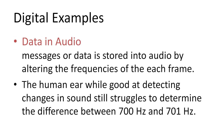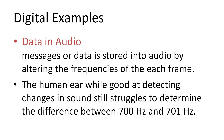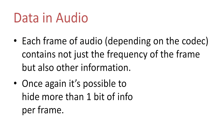Another digital example is hiding messages or data in audio. By altering the frequencies of each audio frame, data can be stored. While the human ear is great for detecting slight changes in sound, it still struggles to differentiate 700Hz and 701Hz. Each frame of audio contains not just the frequency, but also other audio information, though this heavily depends on the audio codec being used. Using additional information in an audio codec can allow us to store more than 1 bit per frame.